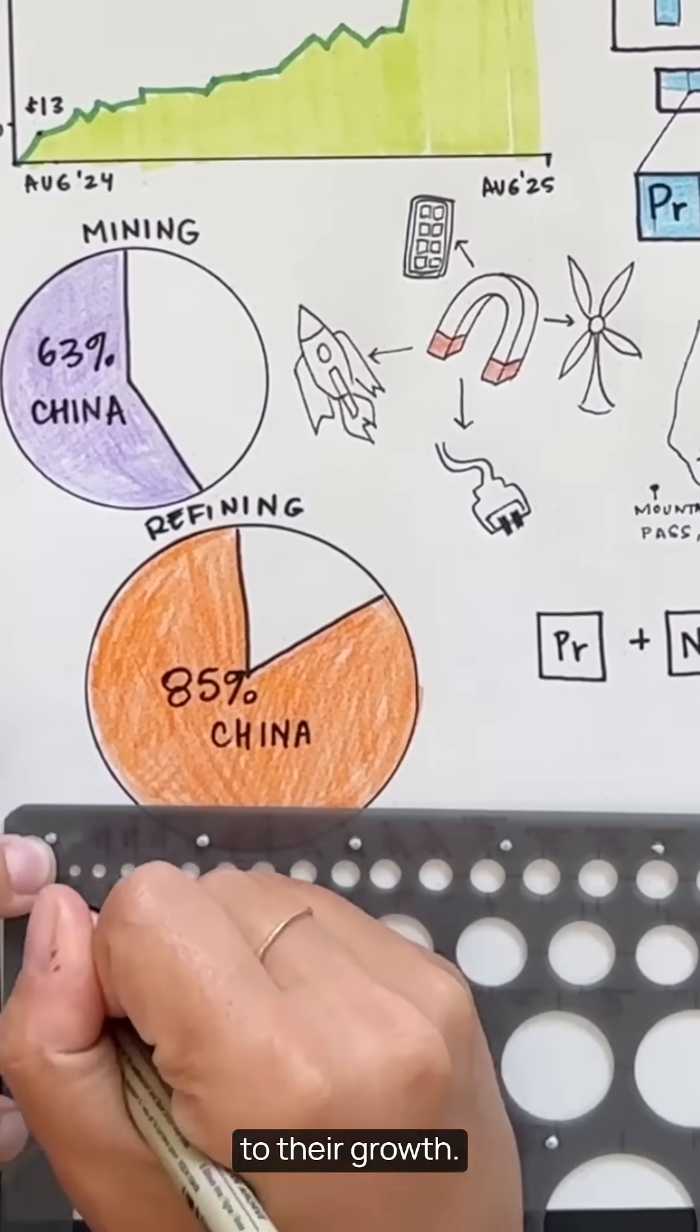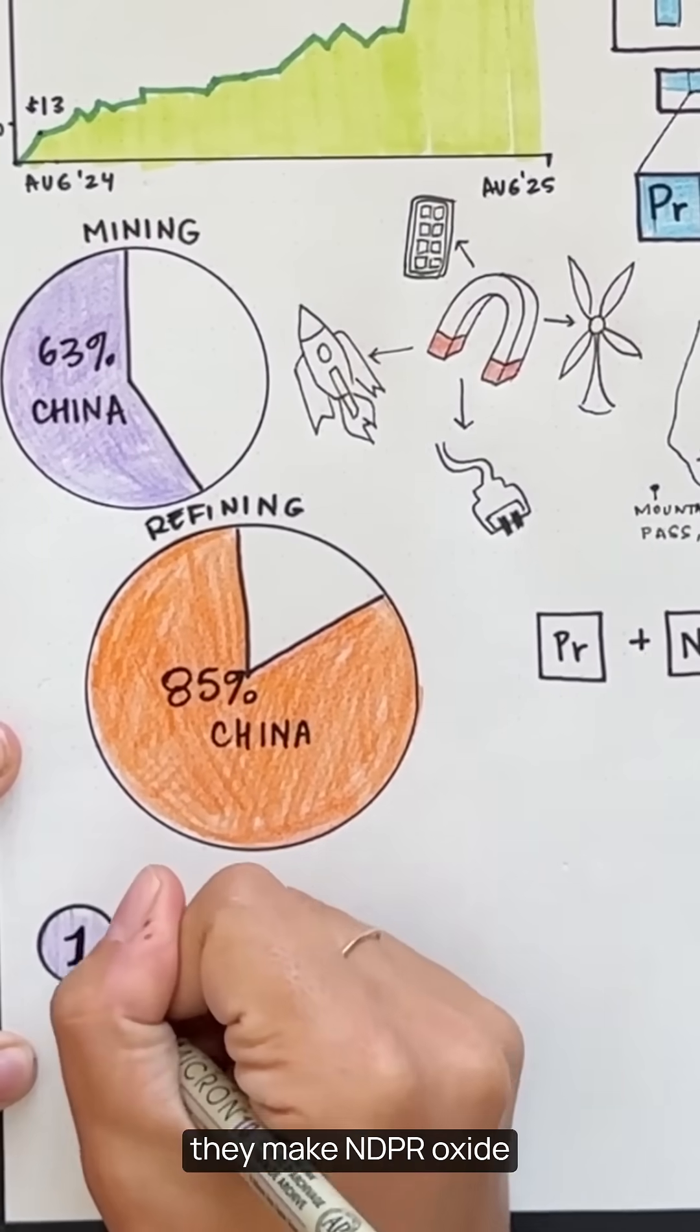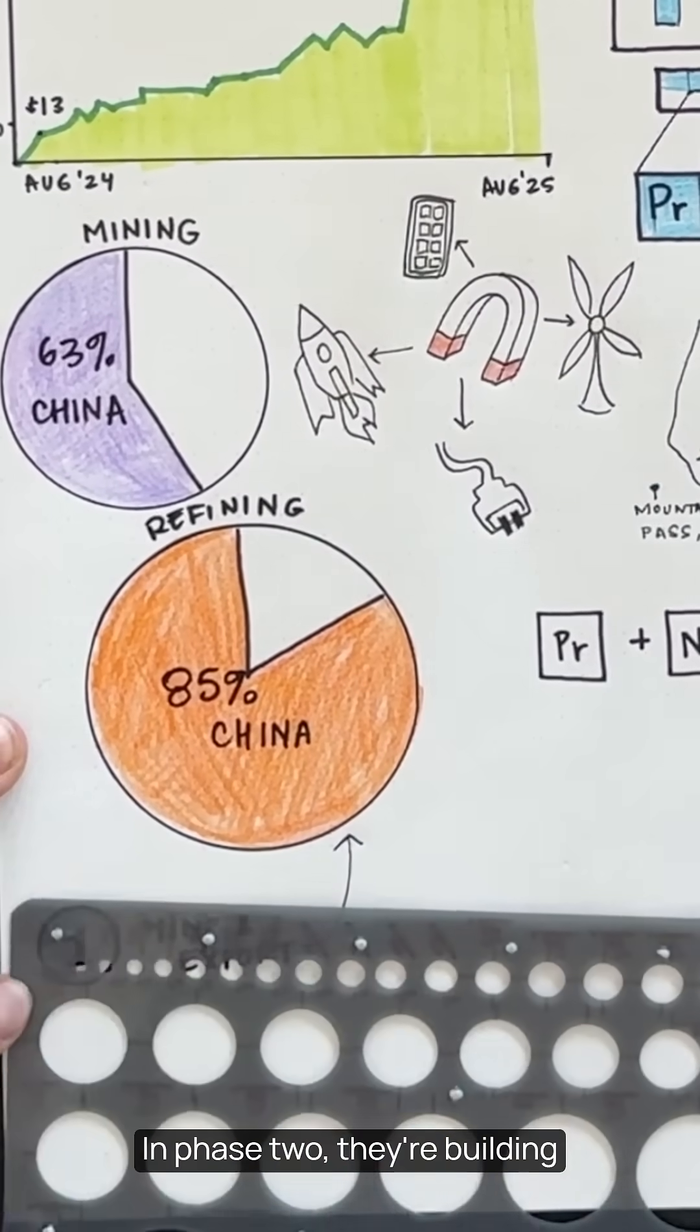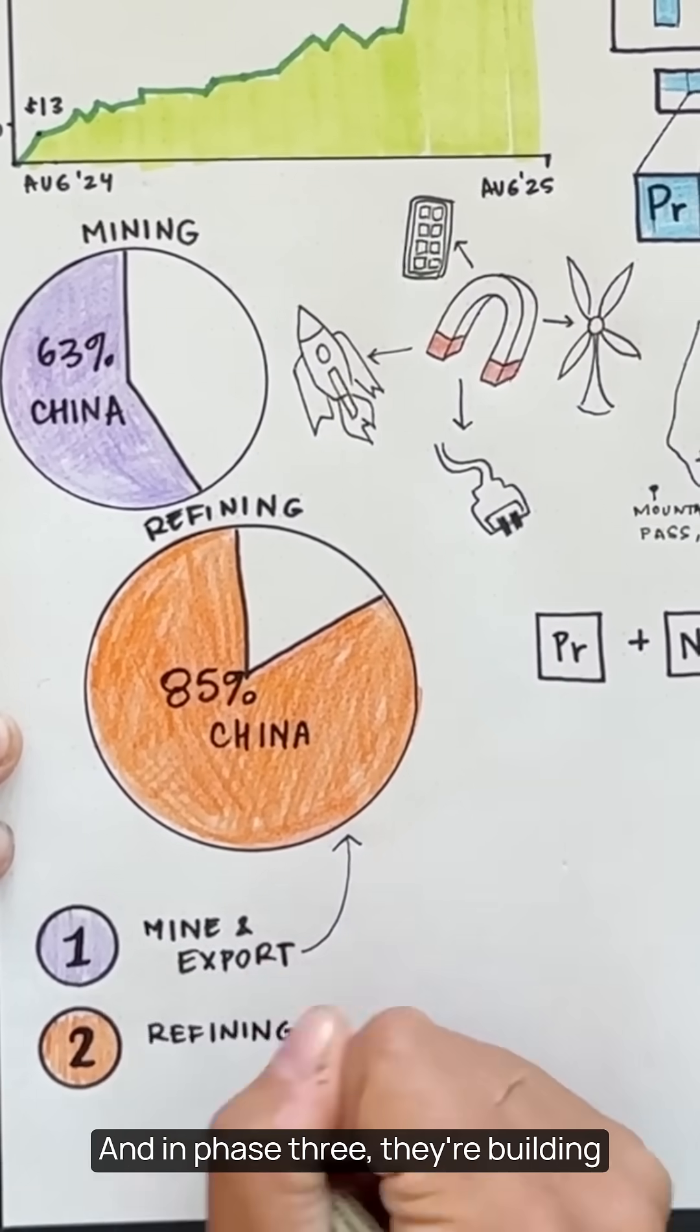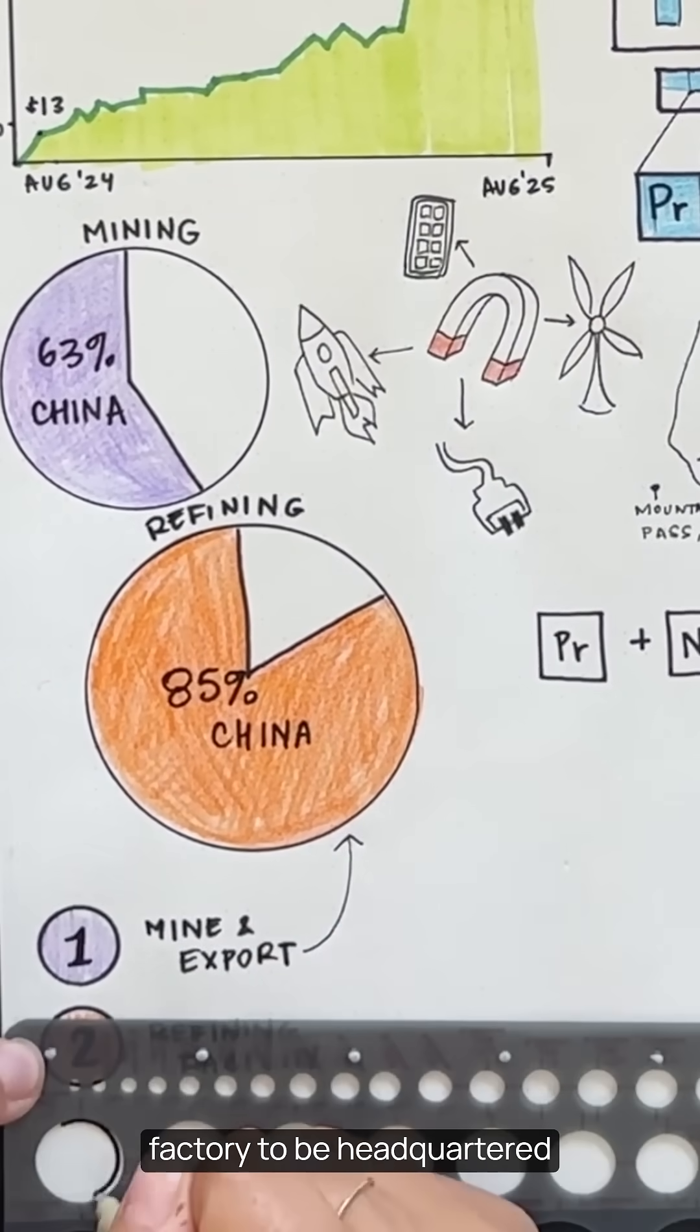There are three phases to their growth. In phase one, where we are now, they make NDPR Oxide and ship it to magnet manufacturers abroad. In phase two, they're building a refining factory to process entirely on-site. And in phase three, they're building a whole magnet factory to be headquartered in Fort Worth, Texas.